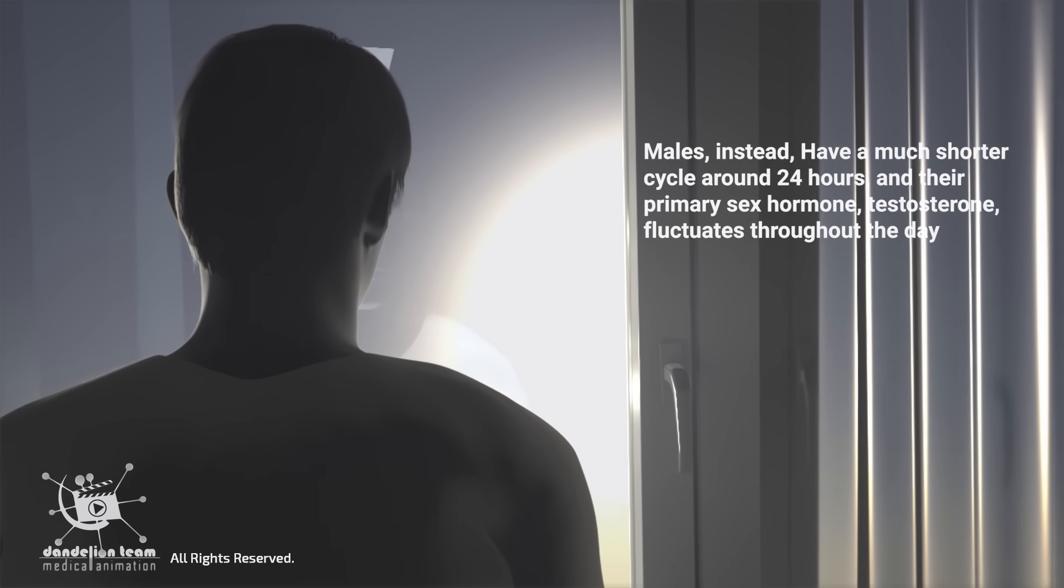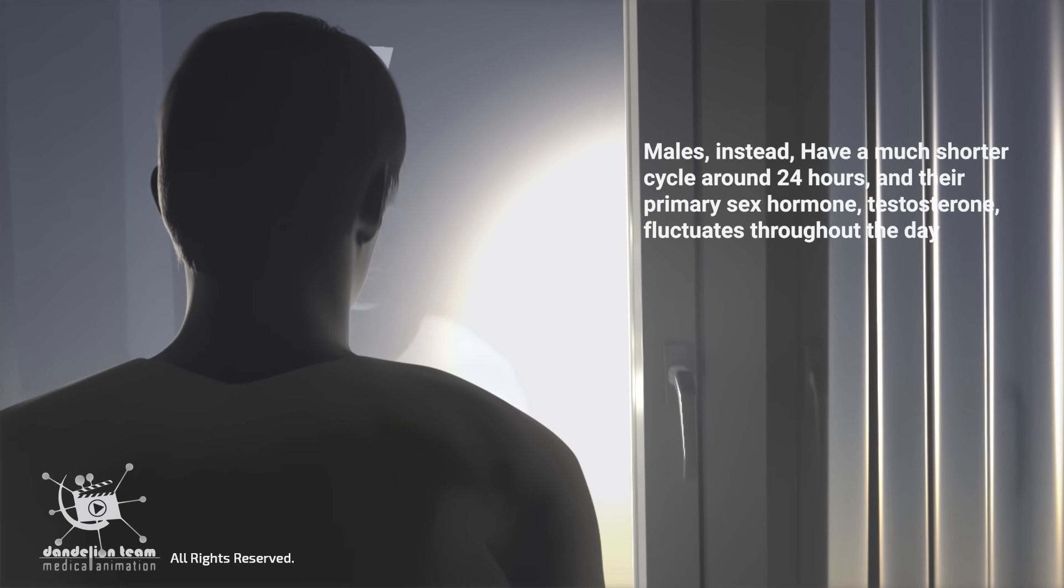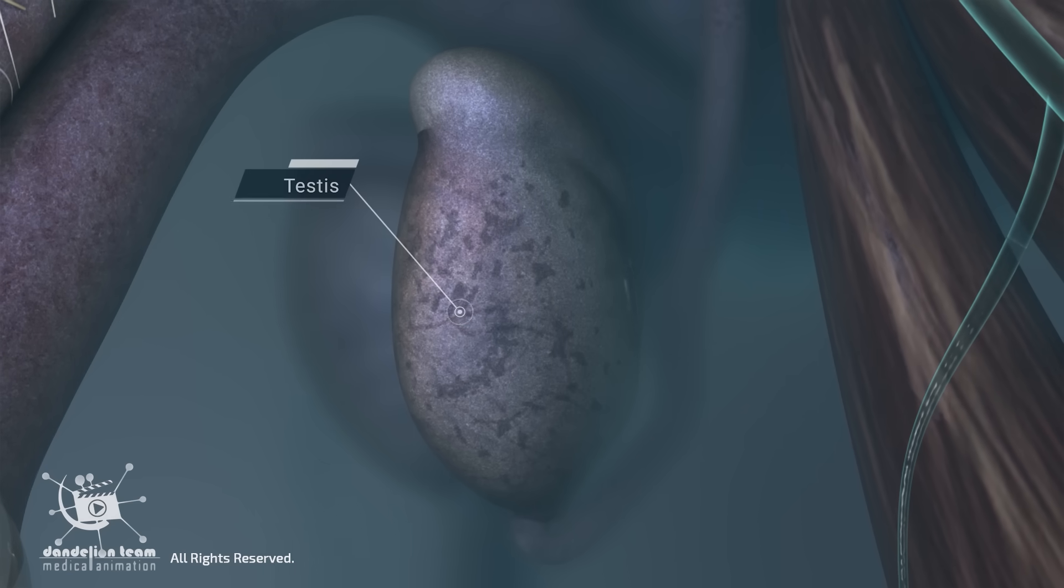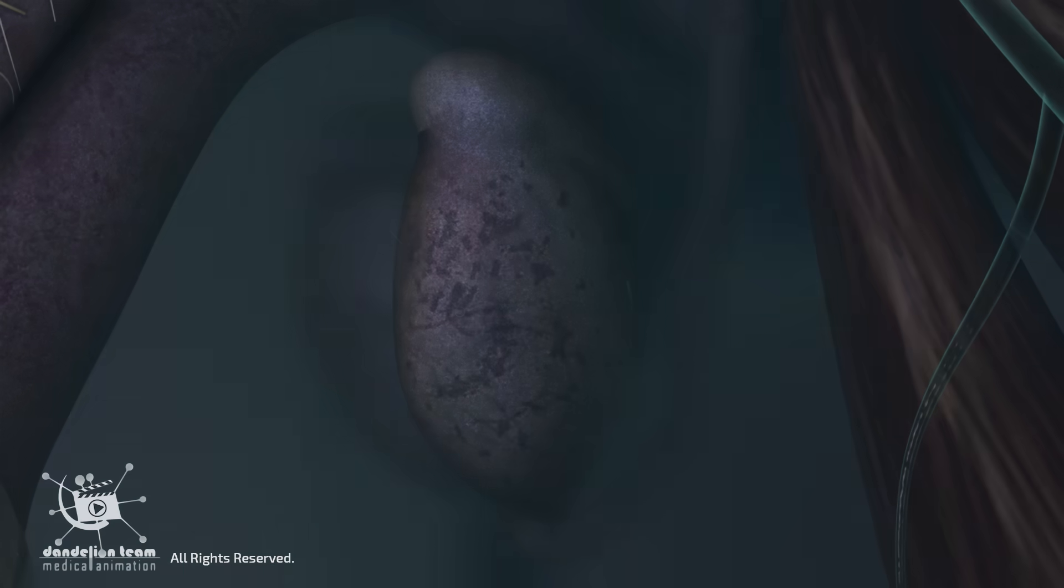Males, instead, have a much shorter cycle, around 24 hours, and their primary sex hormone, testosterone, fluctuates throughout the day.